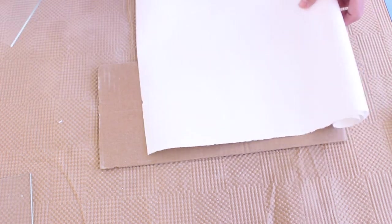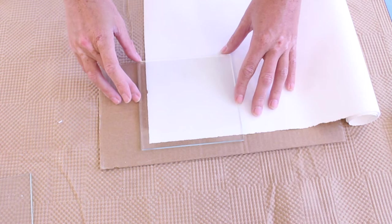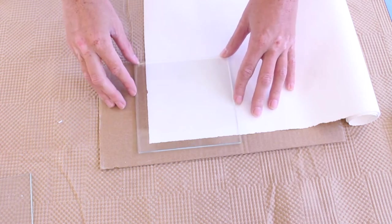For this project, I chose a 5x5 dish and after cutting two pieces of clear to 5x5, I used one of those pieces to cut a piece of kiln paper.